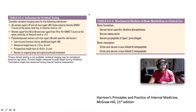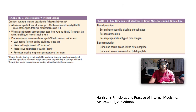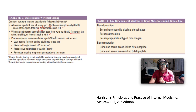Indications for vertebral imaging: all women above 70 and all men above 80; if BMD T-score at the spine, total hip, or femoral neck is at or below minus one; women aged 65 to 69 and men aged 70 to 79 if the T-score is less than minus 1.5; postmenopausal women and men above 50 with low-trauma fracture in adulthood, historical height loss of 4 cm or more, prospective height loss of 2 cm or more, or recent or ongoing long-term glucocorticoid treatment.